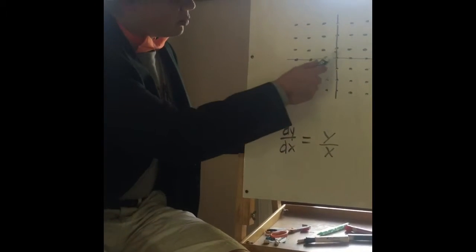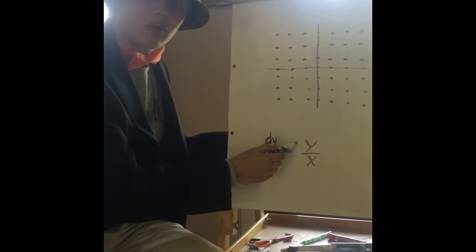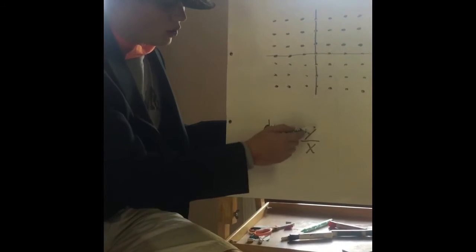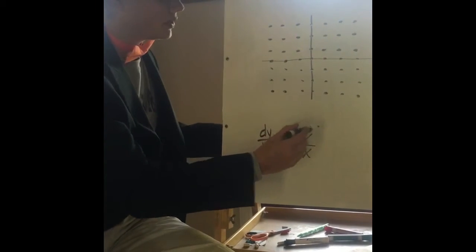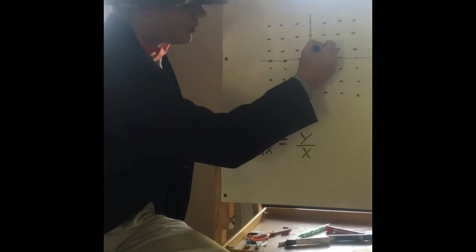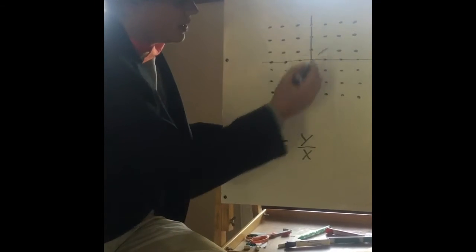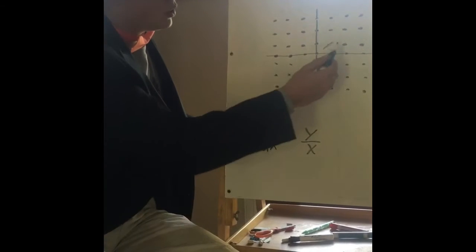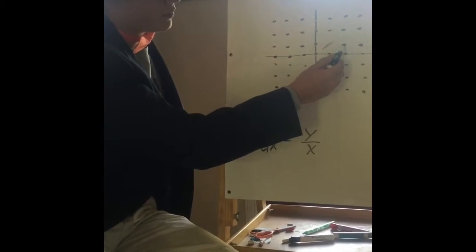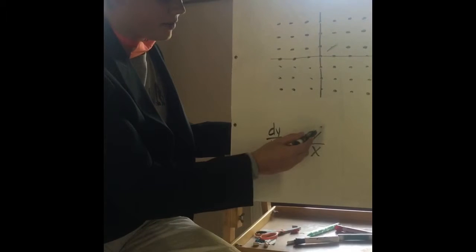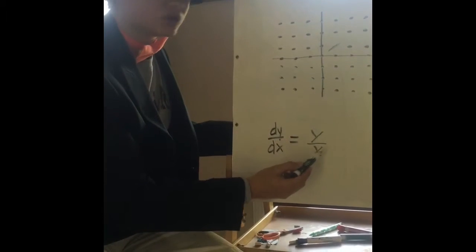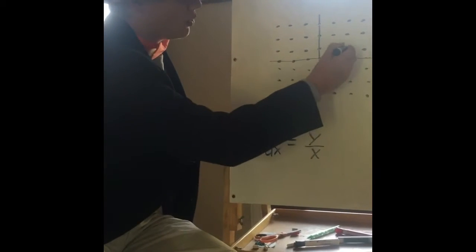Let's use the same point (1, 1), so we have 1 for the y, 1 for the x. 1 over 1 equals 1, so we'll have a slope of 1 at that point. Now let's pick another point, (2, 1). So we have 1 for the y and 2 for the x, which will give us a slope of 1/2.